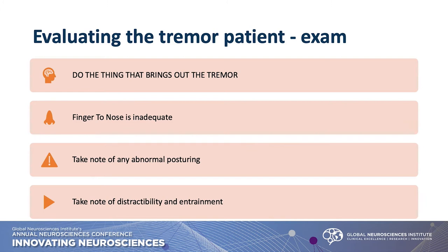Take note of abnormal posturing if you're worried about dystonia, and take note of distractibility and entrainment — that's when we're looking for functional and psychogenic tremors. Entrainment means if you give someone a rhythm, the tremor will start to pulsate in that rhythm. Distractibility: if you have them count backwards from 100 and every time they say the number the tremor becomes most pronounced, or have them trace a figure eight on the floor with their foot — you really have to concentrate to do that — and see if the tremor remains or diminishes.